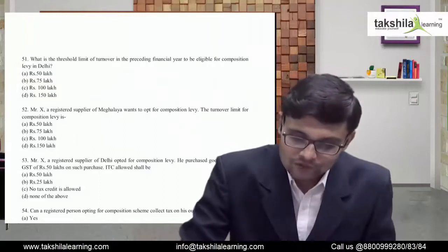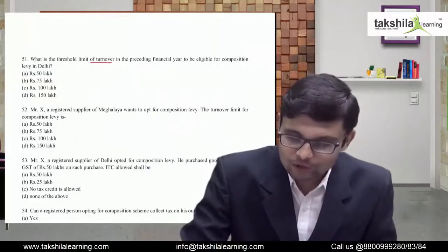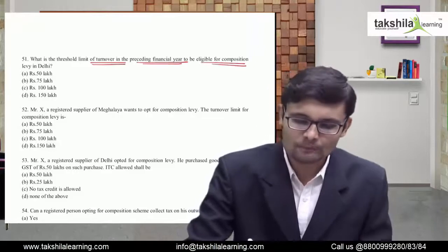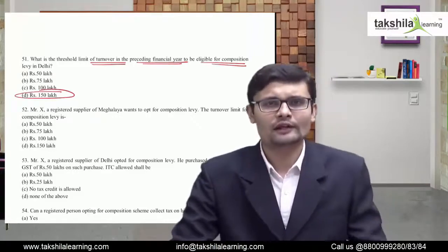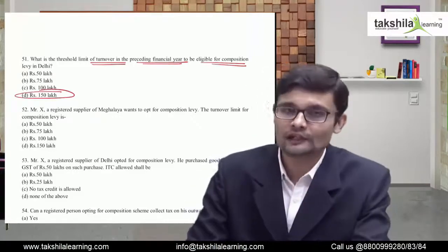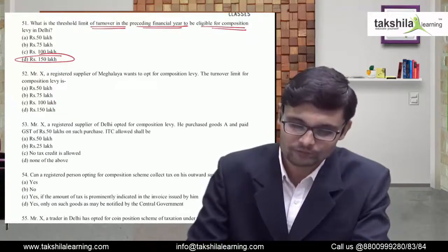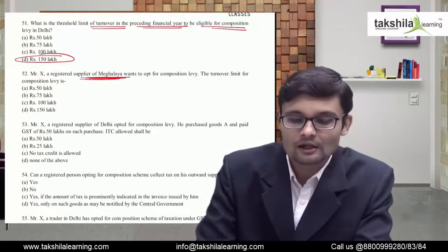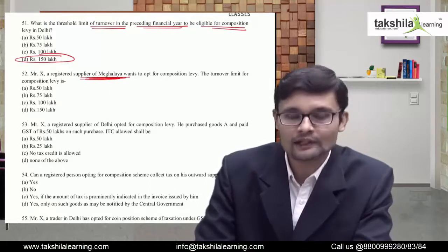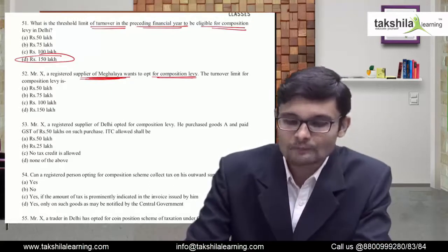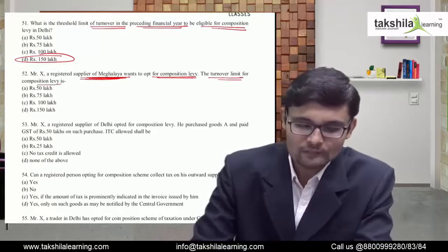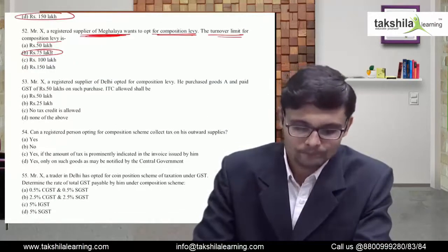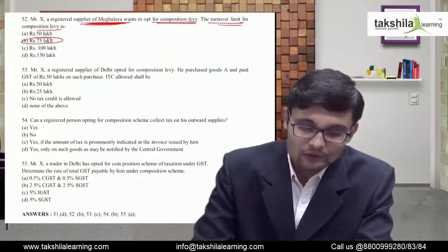What is the threshold limit of turnover in the preceding financial year to be eligible for the composition scheme? It is 150 lakh. In special category states it is 75 lakh. For example, Meghalaya is a special category state, so for composition levy the turnover limit is 75 lakh.